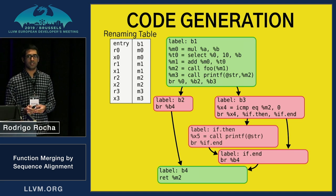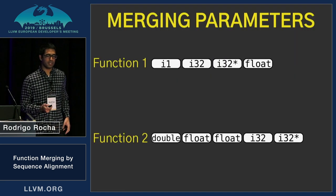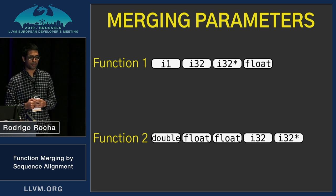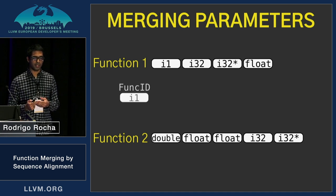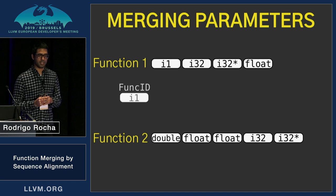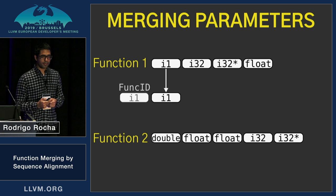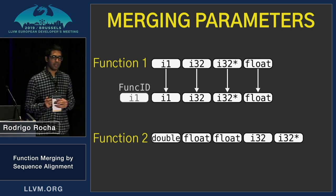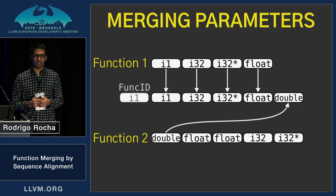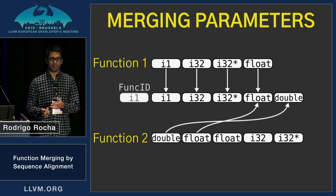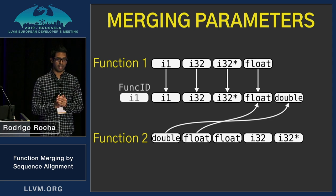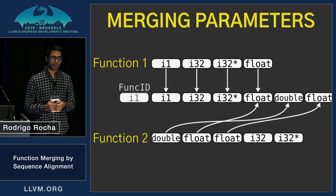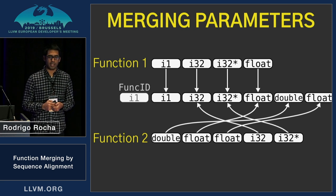Now the only thing we need to do is handle the list of parameters. The first three steps are very simple: first we create the function identifier — in this case we use just a boolean to use it directly as the conditional. Then we copy all the parameters from function one. For the parameters of function two, we add them if we don't have a corresponding parameter, but if we have a parameter of the same type from the other function, we can reuse it, reducing the number of parameters in our merge function. But we can only reuse the parameters once.